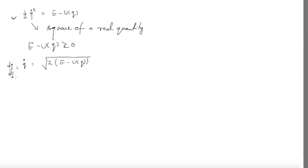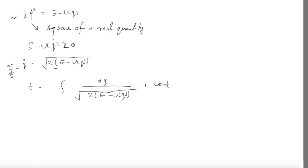Separating variables and integrating, I get t = ∫ dq' / √(2(E − U(q'))) plus a constant of integration. Let me put the integration variable as q prime. This provides a solution: I can know where the particle is at any time.